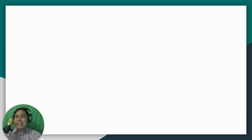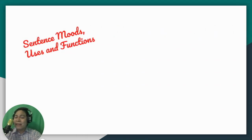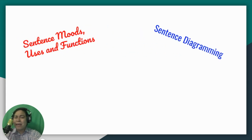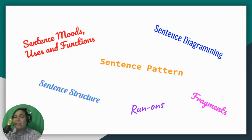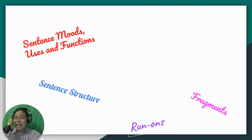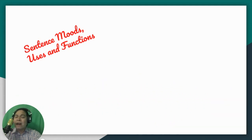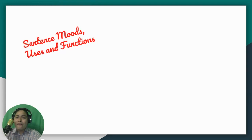There are several lessons concerning sentences because sentences are very important. In order for us to form a paragraph, it consists of sentences. These are the lessons: sentence moods, uses, and functions; sentence diagramming; sentence pattern; run-ons; and the difference between run-ons and fragments. We also have sentence structure, which will be our next lesson. But today, we're going to focus on sentence moods, uses, and functions.